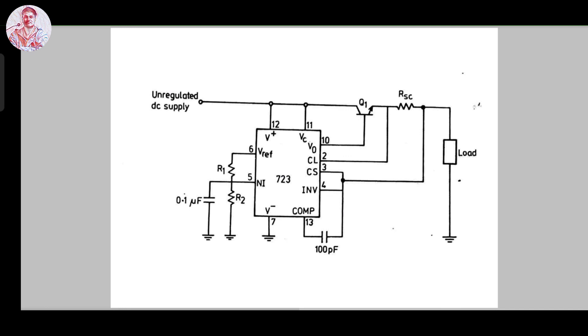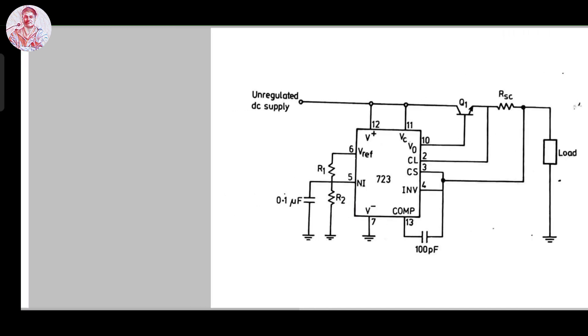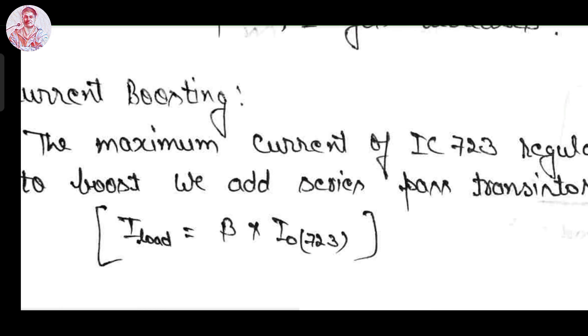The V0 output of series pass transistor 723 IC will drive the Q1, and the final output V load we will get which is beta times the IC723 voltage regulator. I load equals beta times IC723. This is the concept of current boosting.